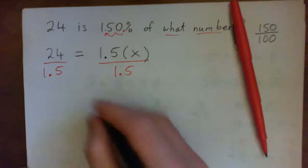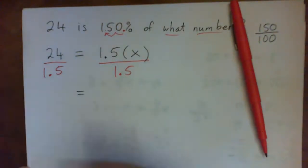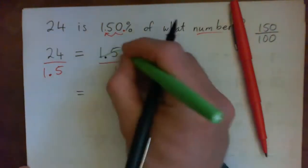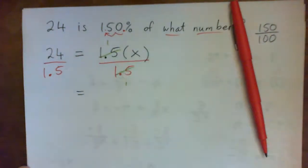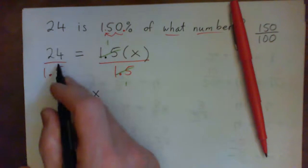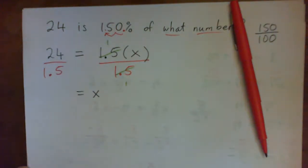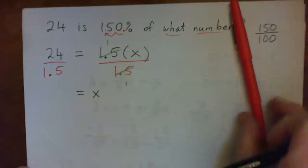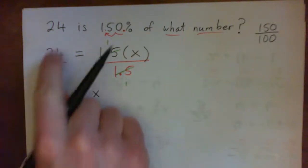So on the right, the 1.5s cross cancel. And we're left with X. On the left, we have 24 over 1.5. And we need to figure out what this is.